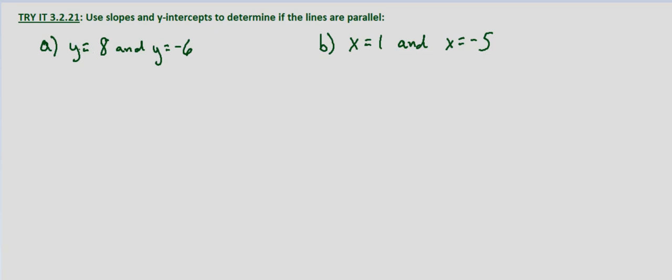So this first one, since we have y equals 8 and y equals negative 6, those are horizontal lines because it's just y equals some value and the values are different. So we know that these lines are parallel. Now that said, let's go ahead and examine their y-intercept.